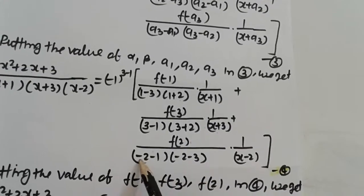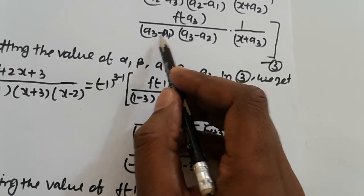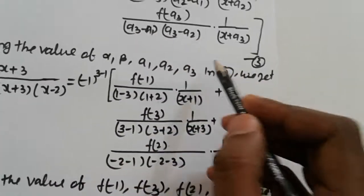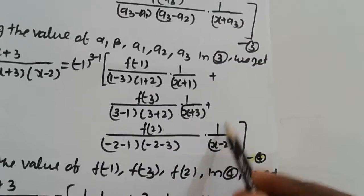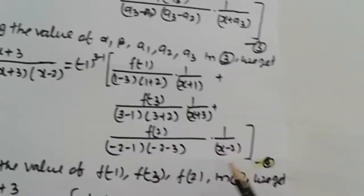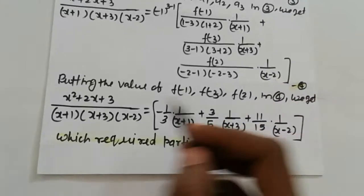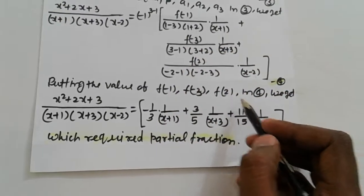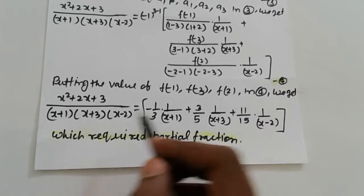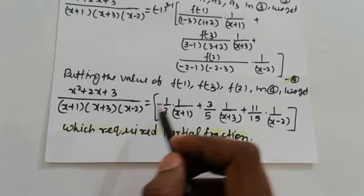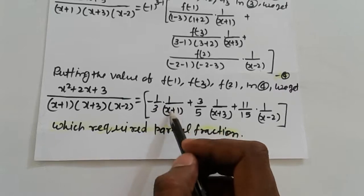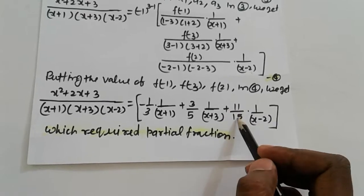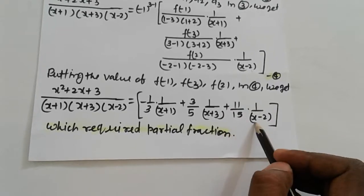Substituting f of minus 1 equals 2, f of minus 3 equals 6, and f of 2 equals 11 into the equation, we get the right hand side as minus 1 upon 3 times 1 upon (x plus 1), plus 3 upon 5 times 1 upon (x plus 3), plus 11 upon 15 times 1 upon (x minus 2).